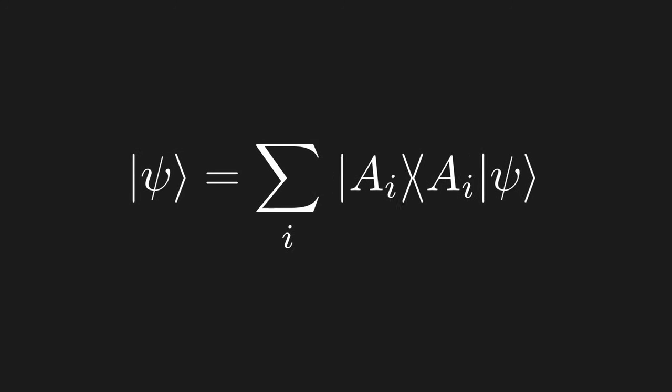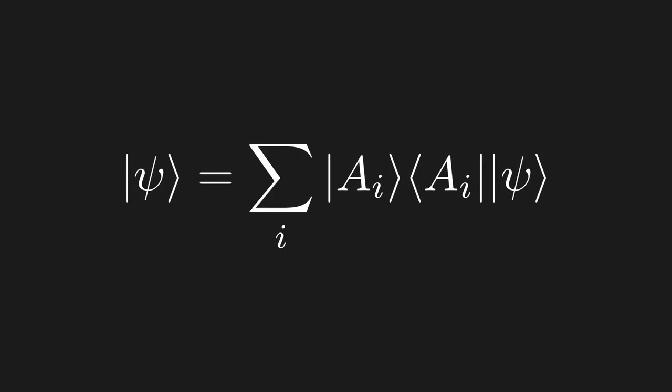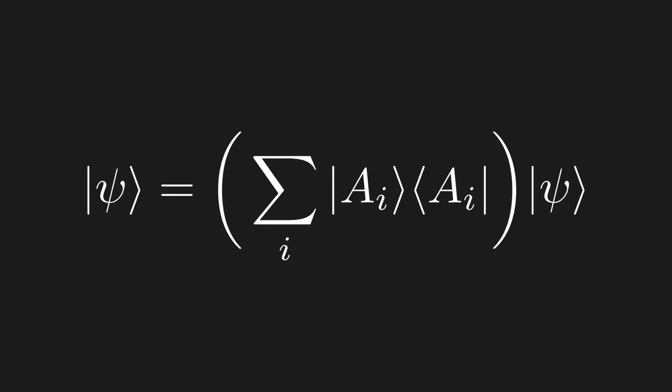So let's plug in this expression for all the coefficients. Now let's move the inner product to the front. Here is the power of bra-ket notation. We can break apart the inner product. So now we have this operator being applied to the ket psi. The ket psi is the same for every element of the sum, so we can pull it out of the sum.